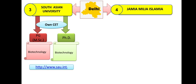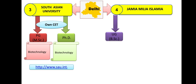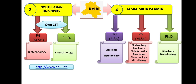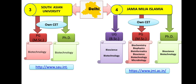The last Delhi university with Biological Sciences is Jamia Millia Islamia. Here BSc (UG) is available in Bioscience and Biotechnology. PG is available in Biochemistry, Biophysics, Bioinformatics, Bioscience, Biotechnology, and Microbiology — quite a long list with many options. PhD is in Bioscience and Biotechnology. For admission, you need to crack their CET (Common Entrance Test). The website is provided.